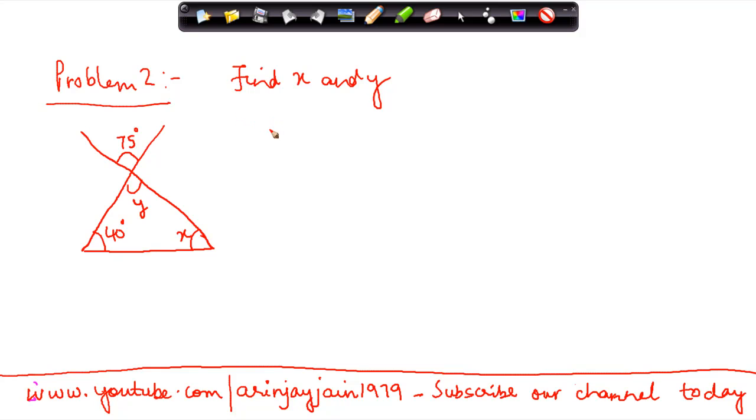So in this case, we know that the value of x plus y plus 40 is equal to 180, because these are three angles of a triangle.